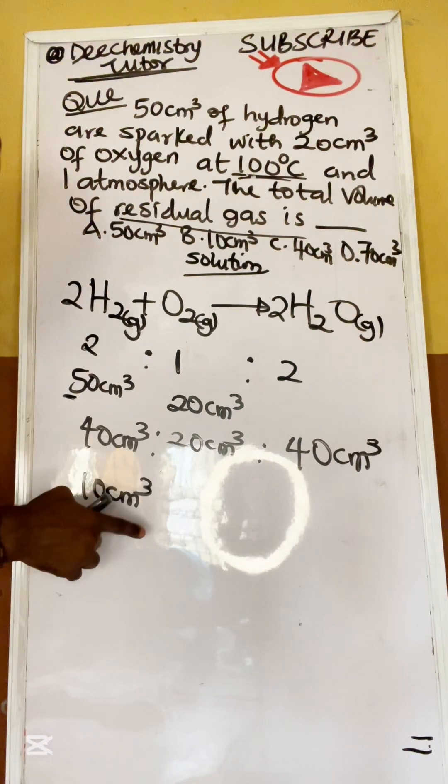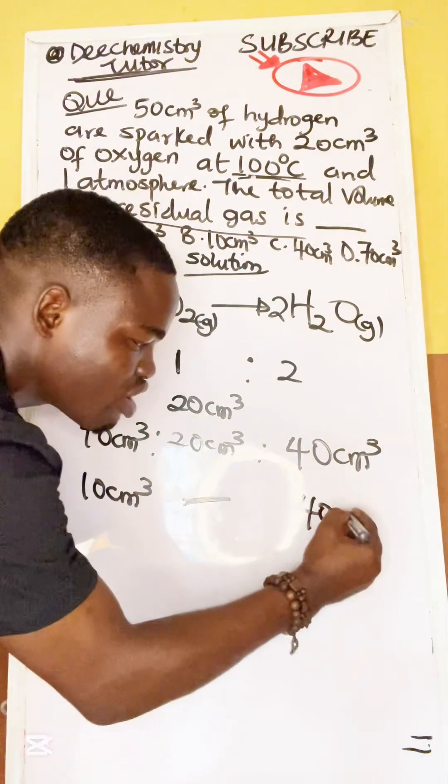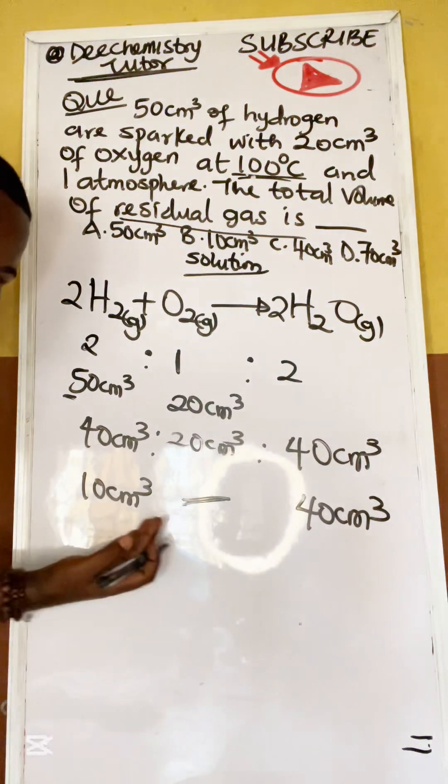That's why you see that what will be left here, because this is excess, I will have 10 cm³ left. But here, I would have used everything. Now, because this is what is formed, this is 40 cm³. This is formation, this is disappearance.